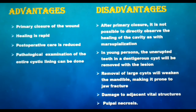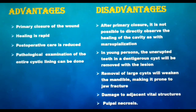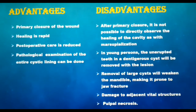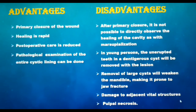Disadvantages are that after primary closure, we are not able to observe the healing of the cavity as in marsupilization. In young persons, the unerupted teeth in a dentigerous cyst will be removed with the lesion, therefore the dentition will be affected. Removal of large cysts will weaken the mandible, making it prone to jaw fractures. High risk of damage to adjacent vital structures and pulpal necrosis are also downsides of enucleation.